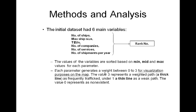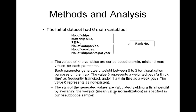Each parameter generates a weight between 0 to 3 for visualization purposes on the map. The value 3 represents a weighted path — a thick line — for a frequently trafficked route, while a value of 1 represents a thin line, a weak path. The value 0 represents a non-existent path. The sum of the generated values are calculated, yielding a final weight by averaging the weights — the mean value normalization — as specified in our pseudocode example.